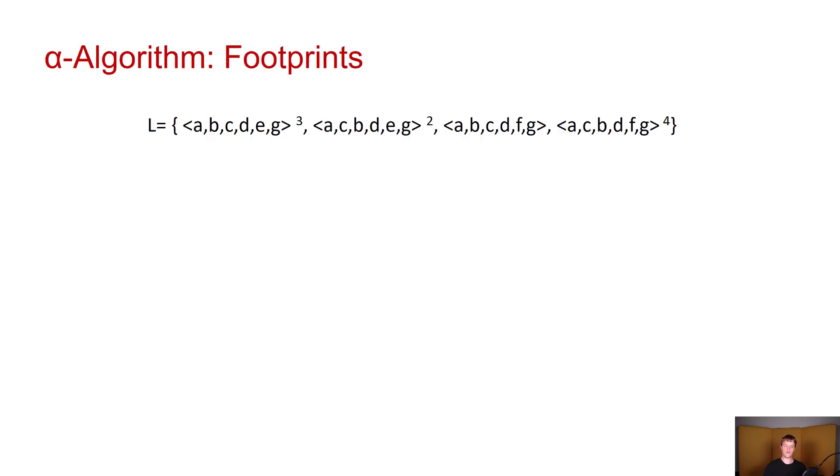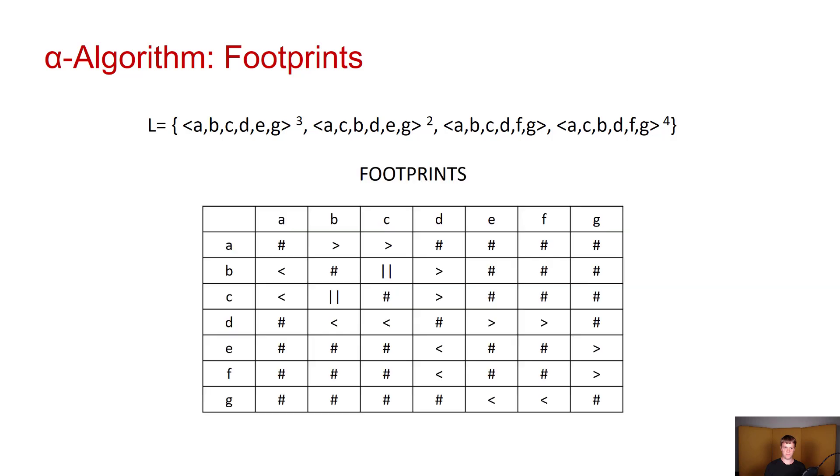Now the idea once you have those ordering relations figured out is to put them in a table that we consider the log footprints. For the example log shown here we have the following footprints table. And here we can see that A is directly followed by B. A is also directly followed by C. B and C occur in parallel. Meanwhile D and A do not have any relation between them. Now the alpha algorithm is going to use this table and apply a series of patterns in order to create a BPMN process model.